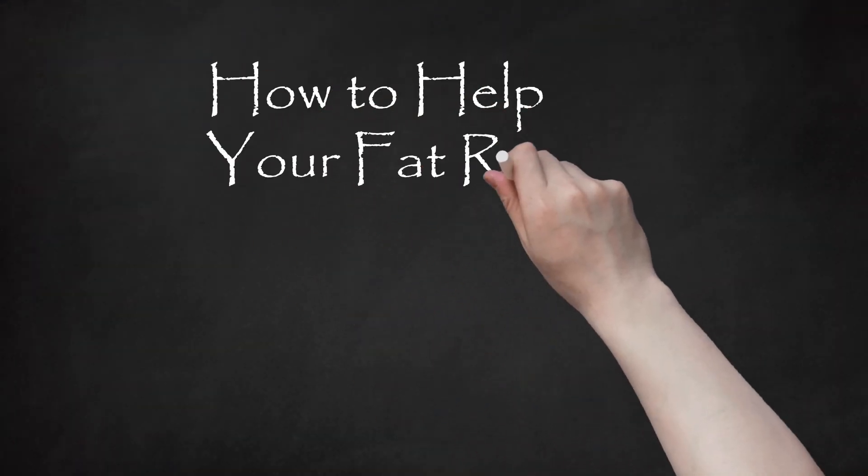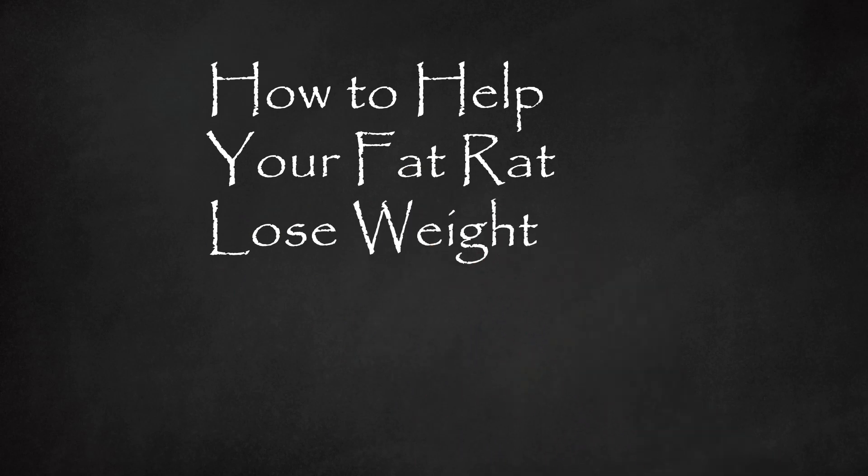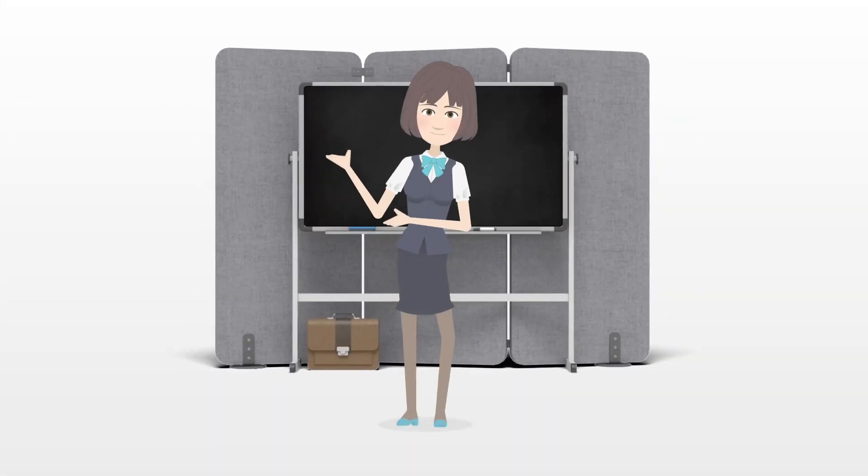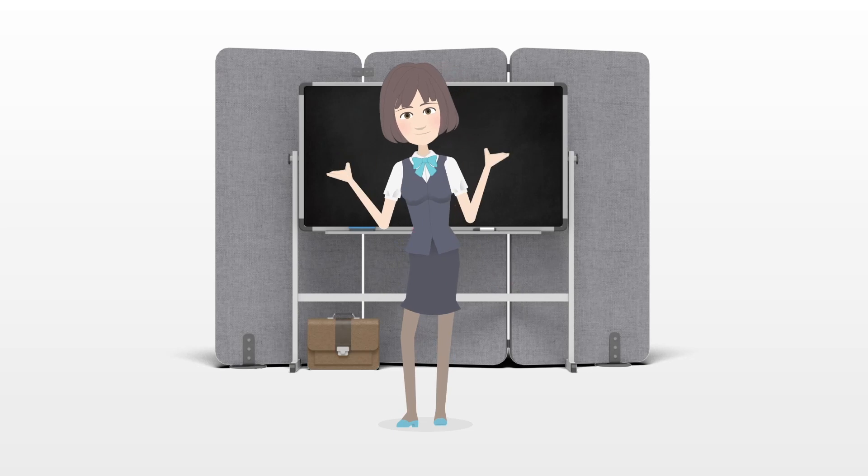How to help your fat rat lose weight. Rats, like humans, are omnivores, which means that they will eat both plant matter and animals.